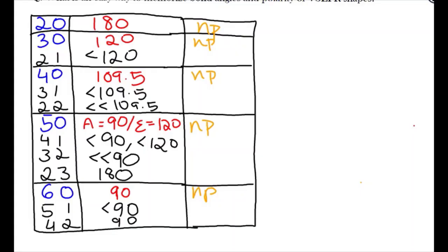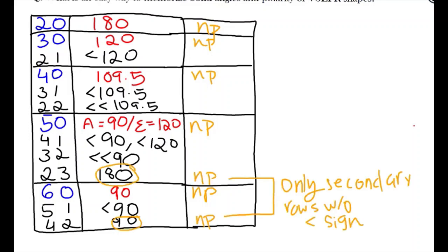As for polarity, just remember that all the shapes with no lone pairs would be nonpolar. This means all our main rows are nonpolar. The only exceptions are the exceptions we already know, specifically the rows 2-3 and 4-2. You can remember this by noting that these are the only secondary rows without a less than sign.